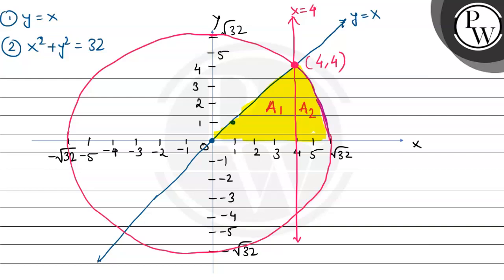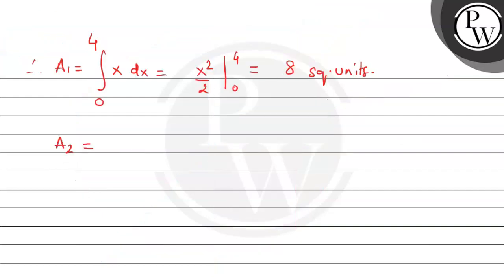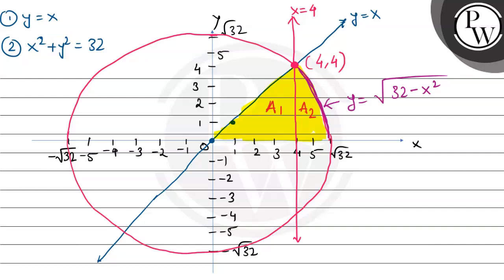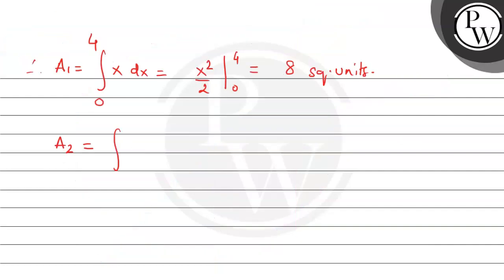Now let's get A2. A2 is the area under the circle arc above the x-axis, so the equation of this curve is y equals square root of (32 minus x squared). Therefore A2 is the integral from 4 to square root of 32. Since 32 equals 16 times 2, square root of 32 equals 4 root 2, so x ranges from 4 to 4 root 2, and the integrand is square root of (32 minus x squared) dx.